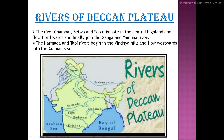Rivers of the Deccan Plateau: rivers Chambal, Betwa, and Son originate in the Central Highland and flow northwards, joining the Ganga and Yamuna rivers. The Narmada and Tapi rivers begin in the Vindhya Hills, flow westward, and merge into the Arabian Sea, as you can see from their positions on the map.